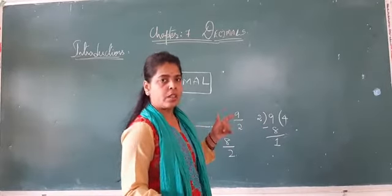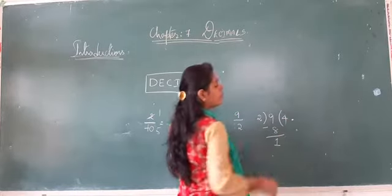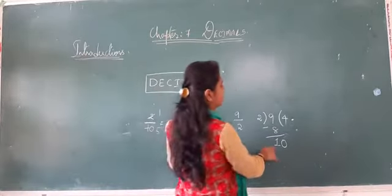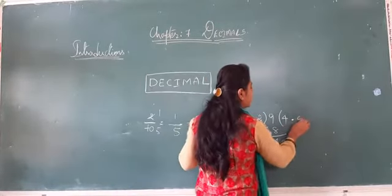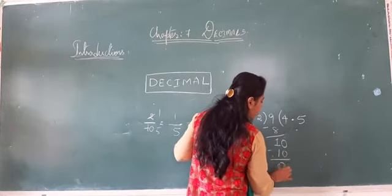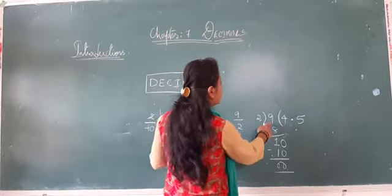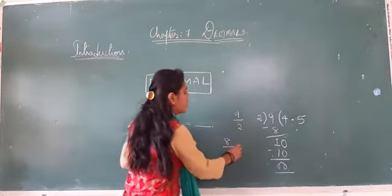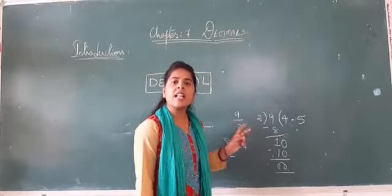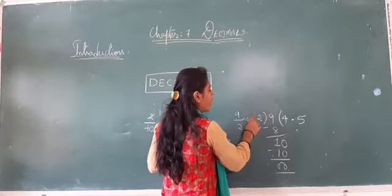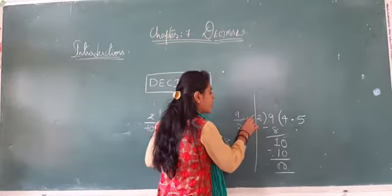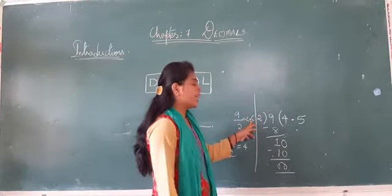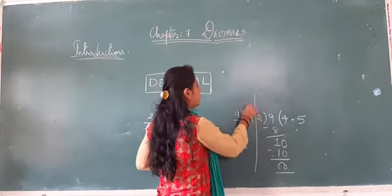To make that remainder 0, we place a decimal point and consider it in the remainder. The remainder becomes 10. Now 10 is in the 2 times table — 2 times 5 is 10 — so you get remainder 0. So 9 by 2 is taken as 4 and a half, or 4.5. The point used here is called the decimal point.